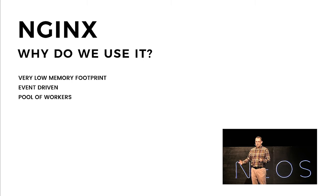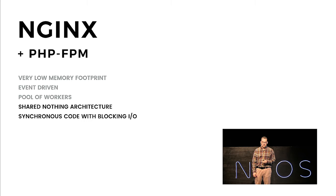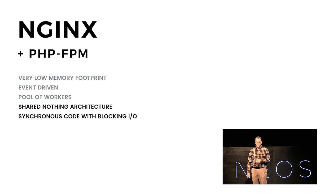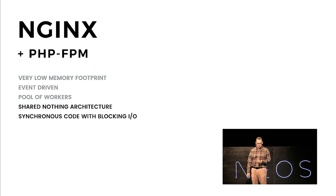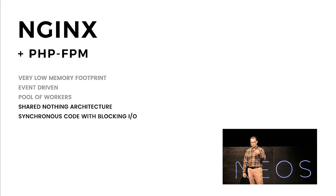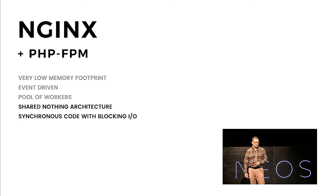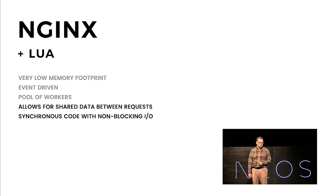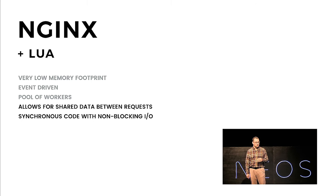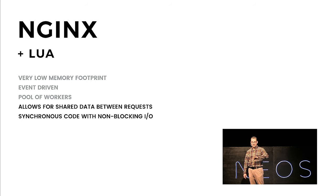We supercharge Nginx with PHP-FPM. We have all the benefits of Nginx, plus the share-nothing architecture so we do not have any data shared between requests. We have synchronous code with blocking IO. Workers are usually spun up during startup, so we do not have a new process being spun for each request, which means stability. But eventually we can still run out of workers, especially if there is something blocking their execution. With Nginx, you have everything you have in Nginx, but it allows you to share data between requests.